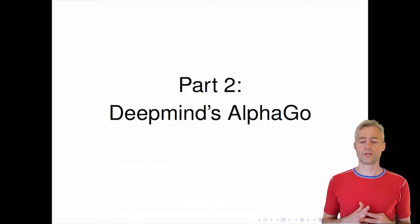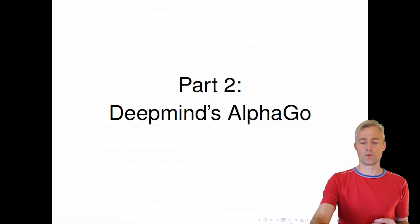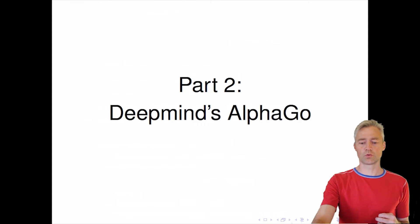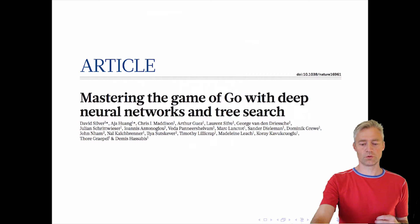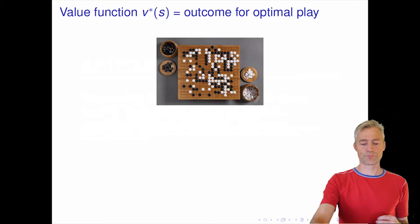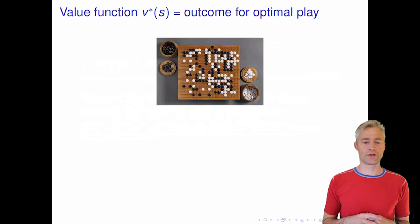DeepMind made a real splash with their Nature paper on the computer system that eventually beat the world champion in the board game Go. Here is the front cover with all the authors of this paper, and now let me try to walk you through their solution.